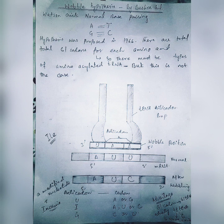In other cases, the anticodon mispairing includes uracil pairing with adenine or guanine. There is also a modified nucleotide called inosine, which can form base pairing with adenine, uracil, or cytosine. Additionally, guanine can form a bond with cytosine or uracil.